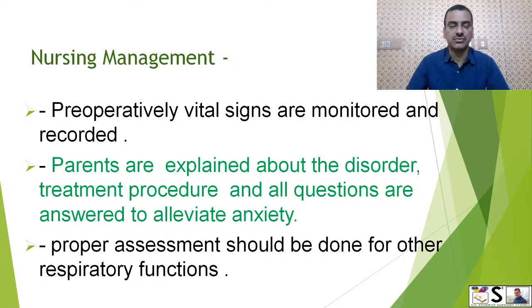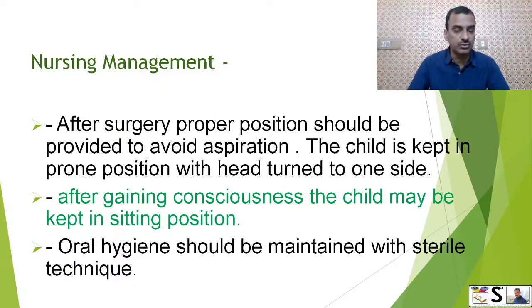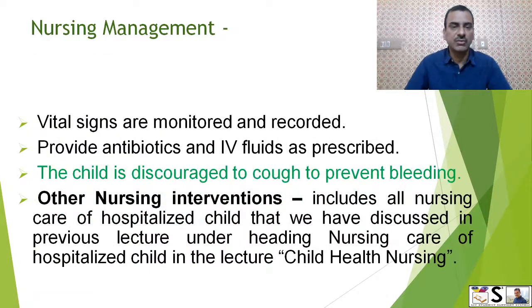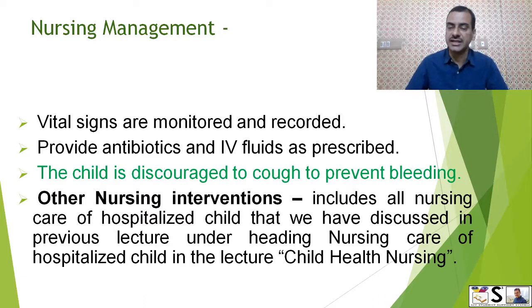Proper assessment should be done for other respiratory functions. After surgery, proper positioning should be provided to avoid aspiration. The child is kept in a prone position with the head turned to one side. After gaining consciousness, the child may be kept in a sitting position. Oral hygiene should be maintained with sterile technique. Vital signs are monitored and recorded. Provide antibiotics and IV fluids as prescribed. The child is discouraged from coughing to prevent bleeding. Other nursing interventions include all nursing care of a hospitalized child, as discussed in the previous lecture on child health nursing.